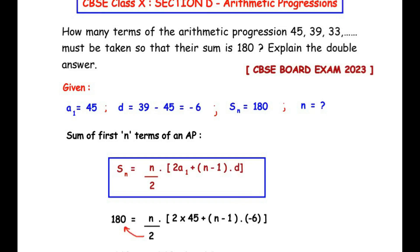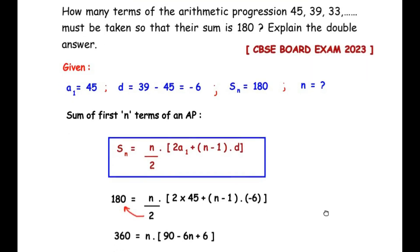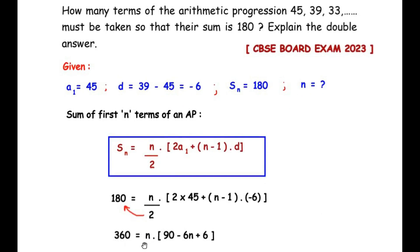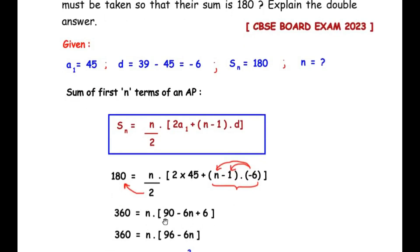2 times 180 gives us 360, so 360 = n × [2 × 45 + (n−1)(−6)]. Now 2 × 45 gives us 90. We expand the bracket: −6 multiplied by n gives −6n, and −6 multiplied by −1 gives +6. Adding 90 and 6 gives 96, so we have: 360 = n × (96 − 6n). Now let us expand this bracket: n × 96 = 96n and n × (−6n) = −6n².